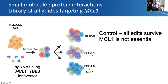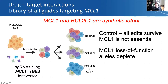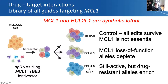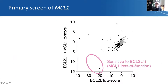We treated the cells and split them into three arms. First is a control — since MCL1 itself is not essential to survival in these cells, regardless of the edit, the cells should continue to proliferate. However, when we add a BCL2-like-1 inhibitor, we expect the cells to die, because MCL1 and BCL2-like-1 are a very well-validated synthetic lethal gene pair. Any guide RNA that introduced a loss-of-function mutation into MCL1 should deplete in this condition. Finally, we screened with both a BCL2-like-1 inhibitor and an MCL1 inhibitor — a drug resistance arm, essentially.